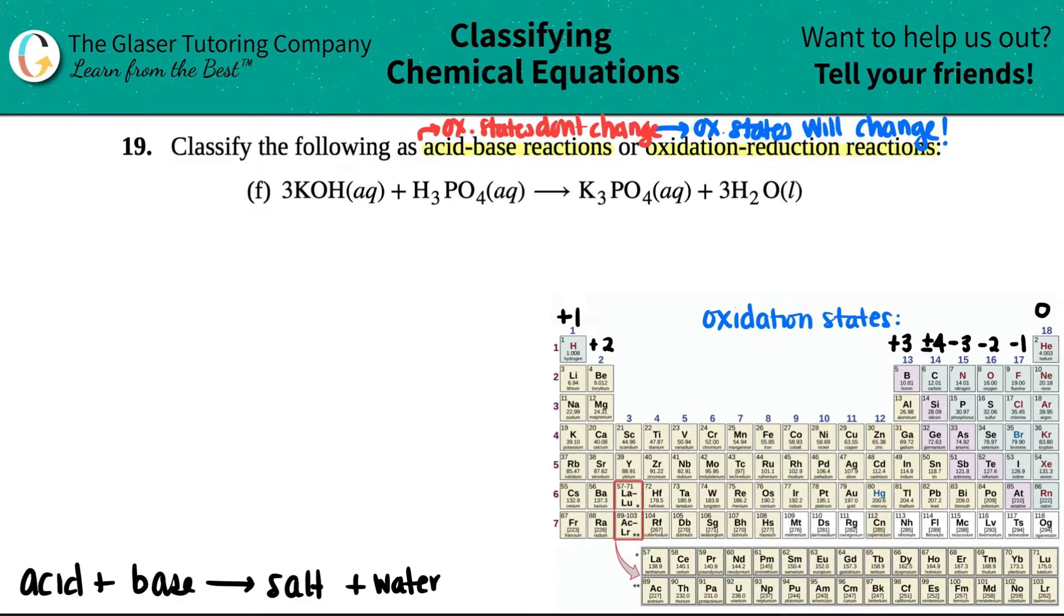So you guys should just memorize your strong acids and your strong bases. There are six of each. Now, I noticed that I have a KOH here, and KOH, that should be ringing bells. KOH is a strong base. Now, I also see on the product side, I have water.